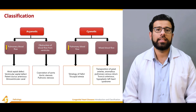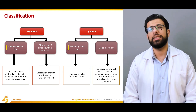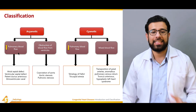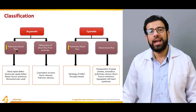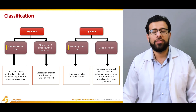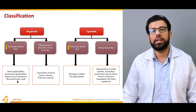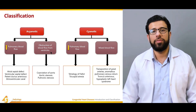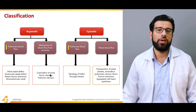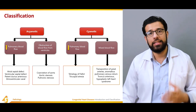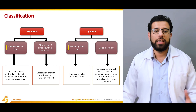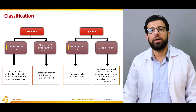The basic classification of congenital heart disease is based on cyanosis. There are two groups: the acyanotic group and the cyanotic group. In the acyanotic group, we discuss conditions in which pulmonary blood flow is increased — these include atrial septal defect, ventricular septal defect, patent ductus arteriosus, and more rarely, atrioventricular canal. The other acyanotic subgroup involves obstruction of blood flow from the ventricles.